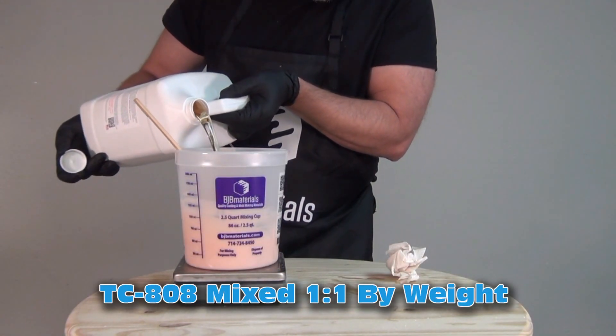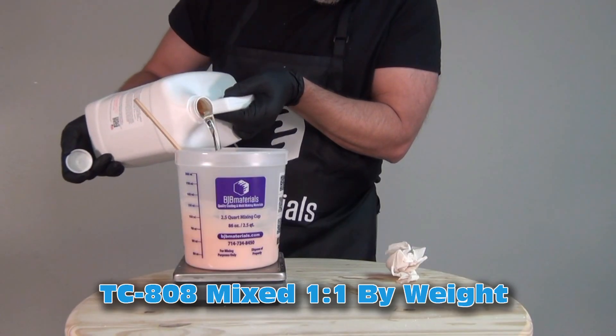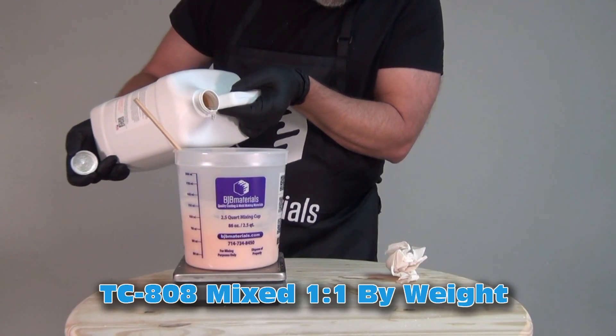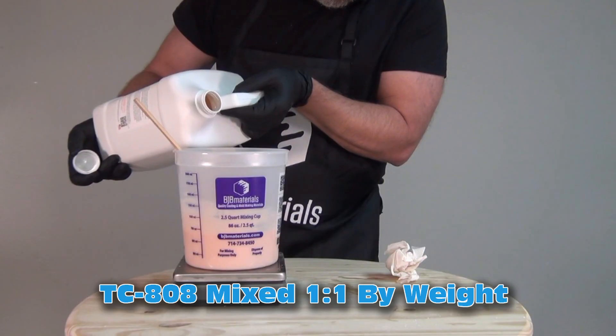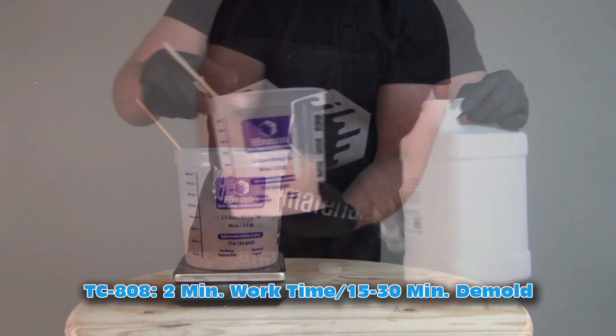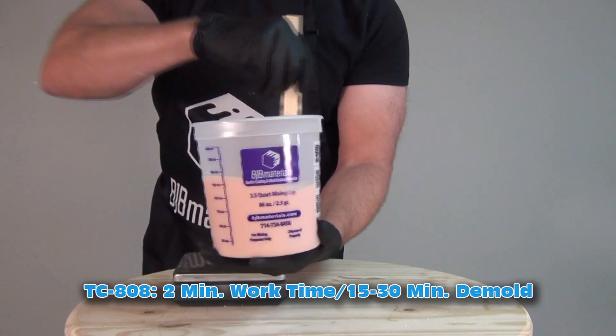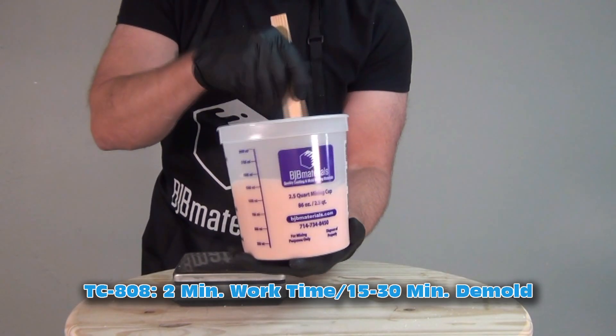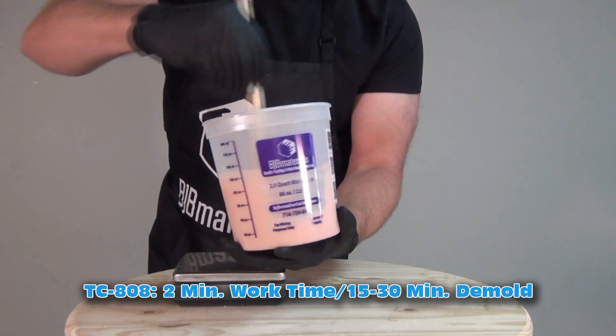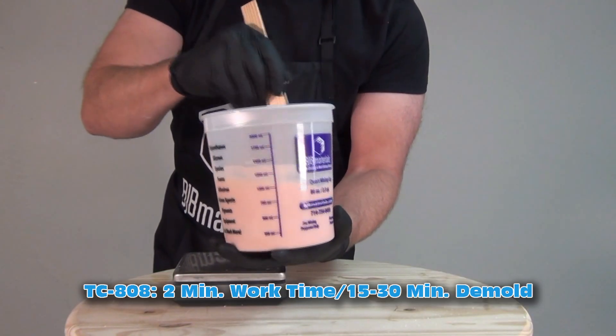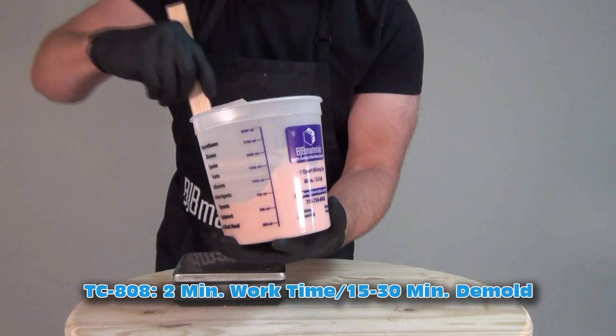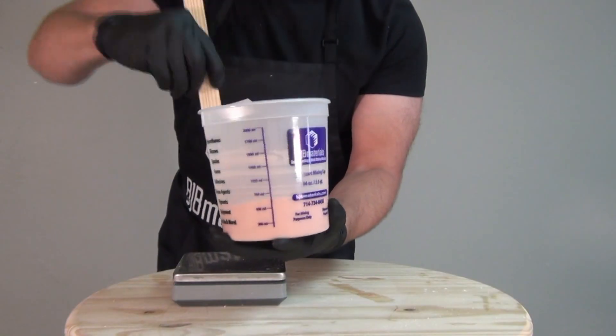So again, once our pigment is added to that B, we're ready to add the part A. And at that point the clock starts ticking. So just remember, as soon as you add your part A, you want to get everything thoroughly mixed, scraping the sides and the bottom of the mixing bucket. Make sure you take time to do that properly. Even though this is fast, we want to get everything mixed up as accurately as possible and then have that ready to pour into our alginate mold.